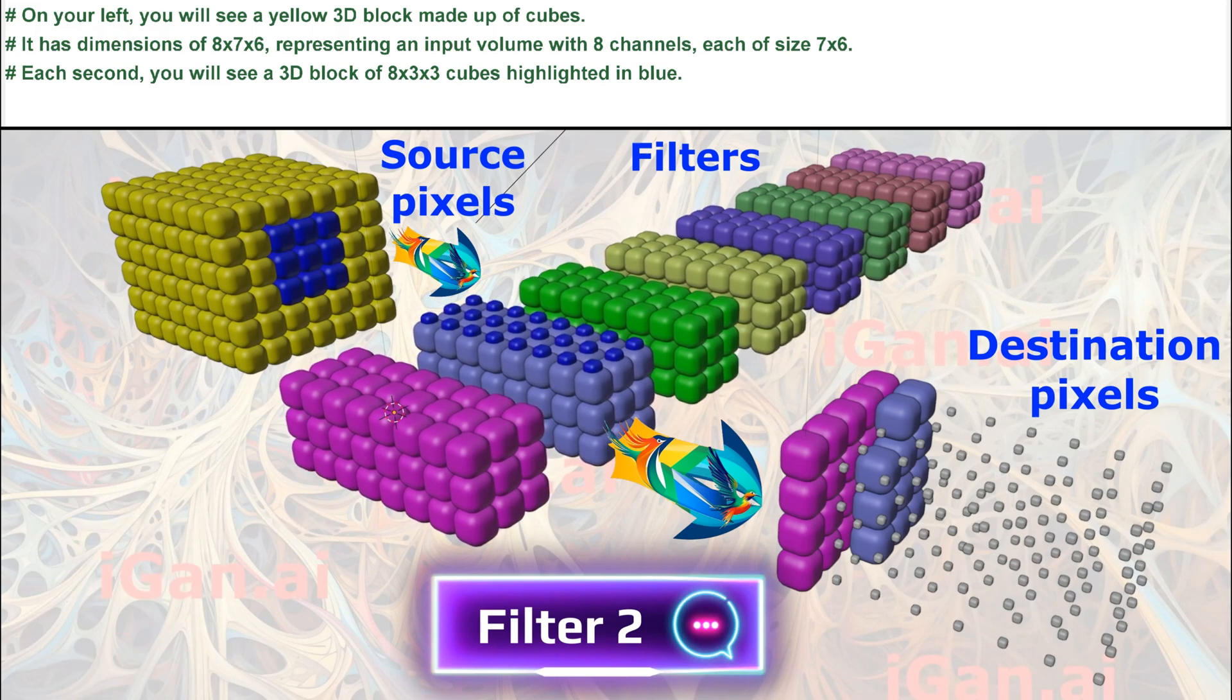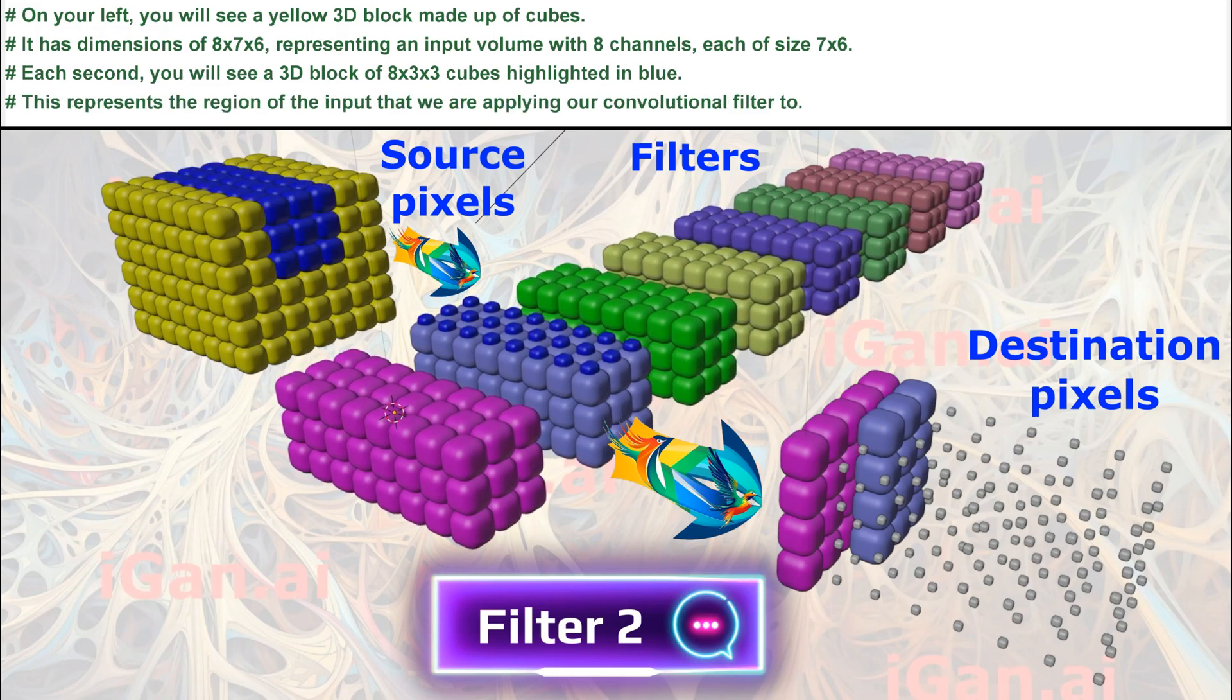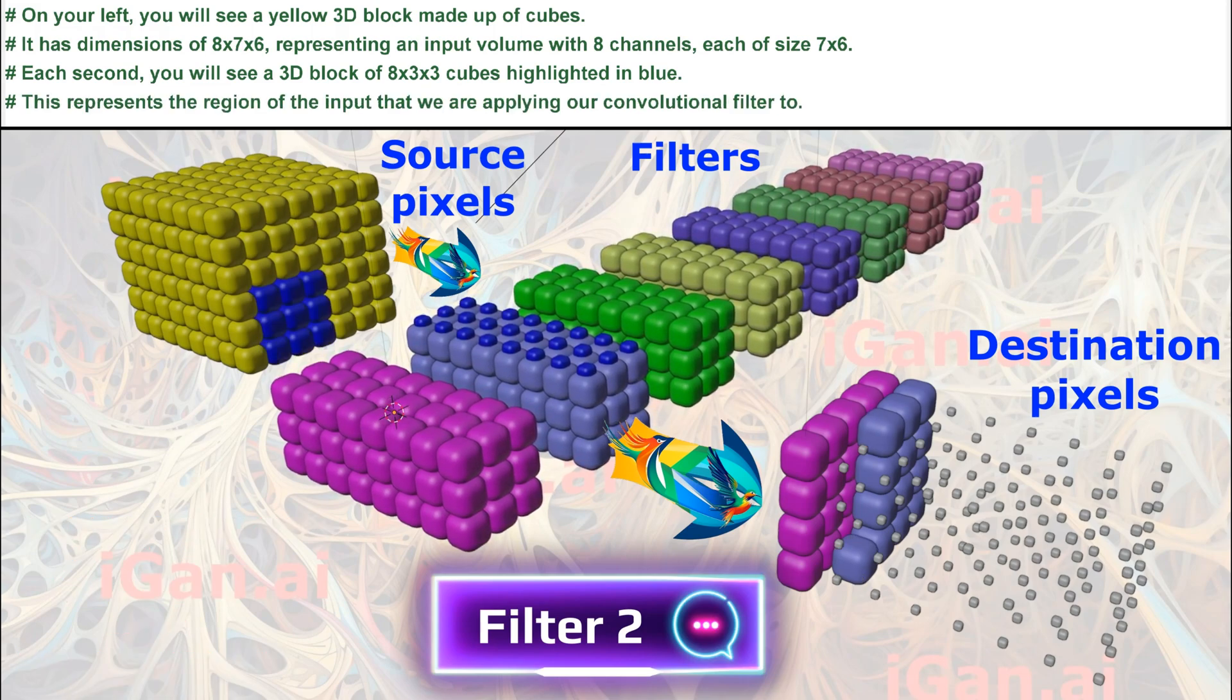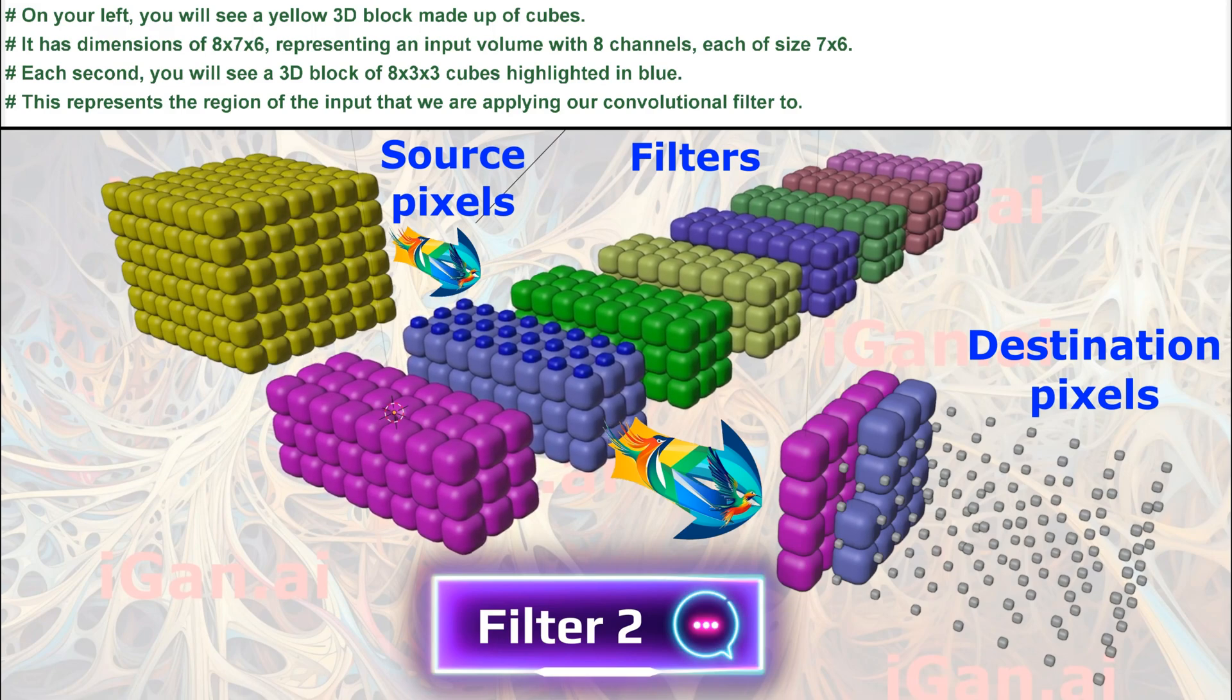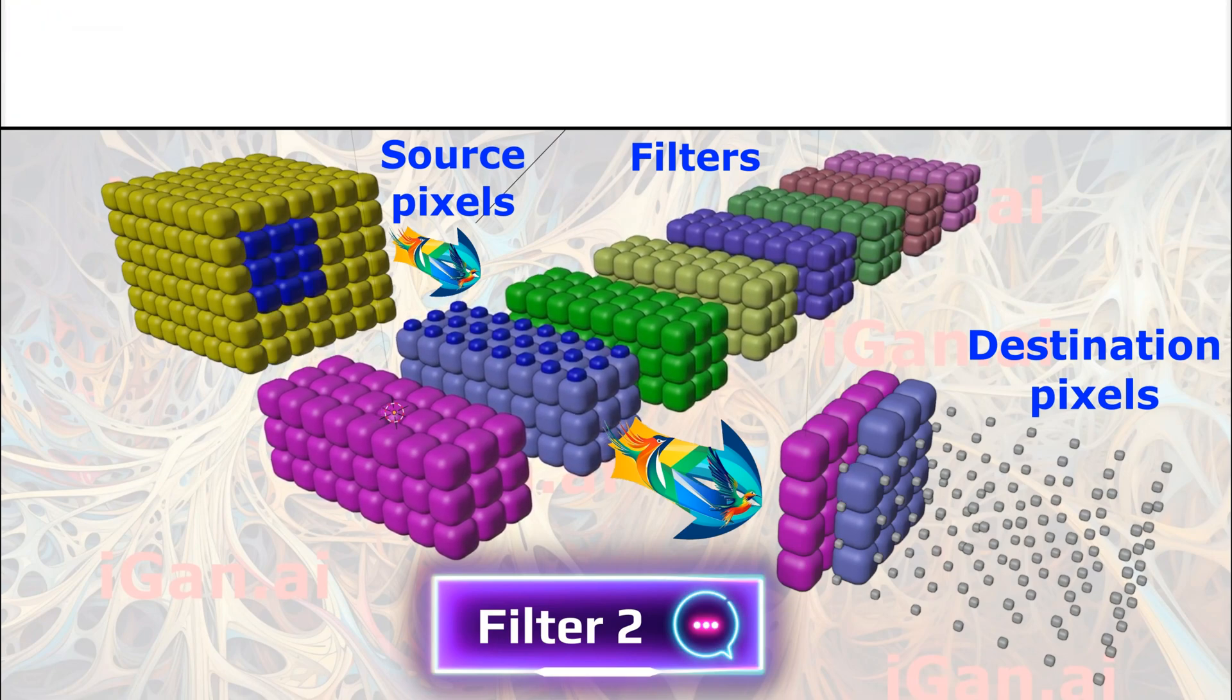Each second, you will see a 3D block of 8x3x3 cubes highlighted in blue. This represents the region of the input that we are applying our convolutional filter to.